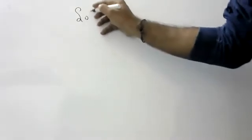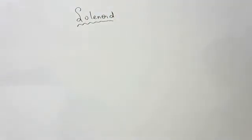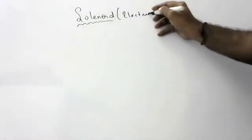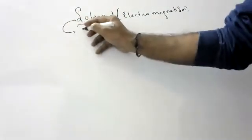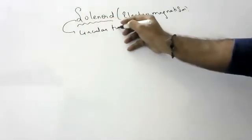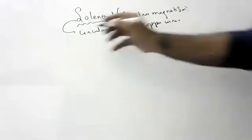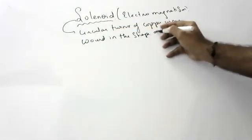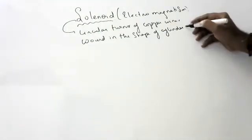Today we will discuss an important topic in electromagnetism: the solenoid. What is a solenoid? The definition of solenoid: circular turns of copper wire wound in the shape of a cylinder is called a solenoid.